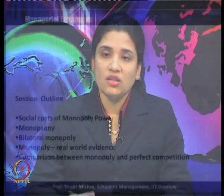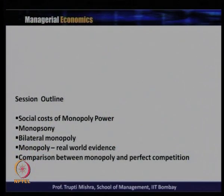We also introduced the Rothschild index, and today we will discuss it further before moving to our next topic. After discussing the Rothschild index, we will focus on the social cost of monopoly power. We will also take a special case where there is only one buyer — monopsony — then a bilateral monopoly with one seller and one buyer, followed by real-world evidence and a comparison between monopoly and perfect competition.